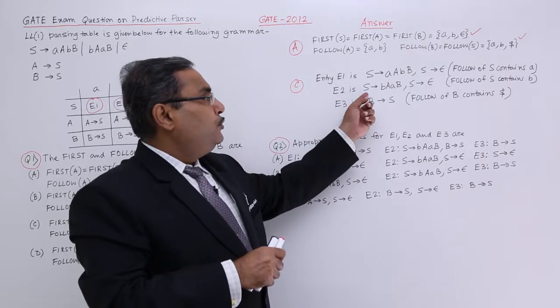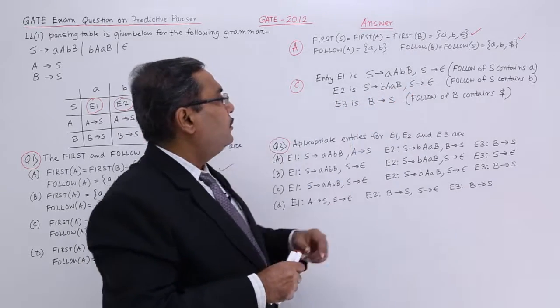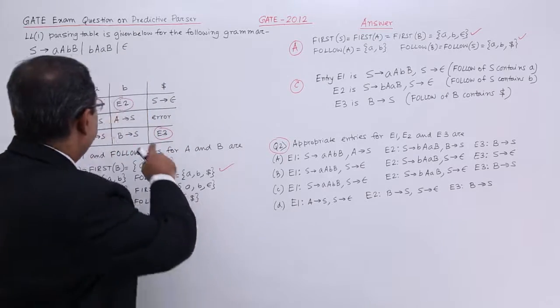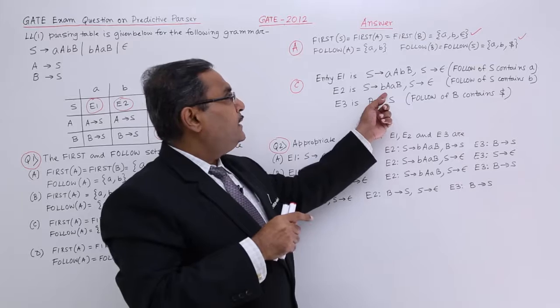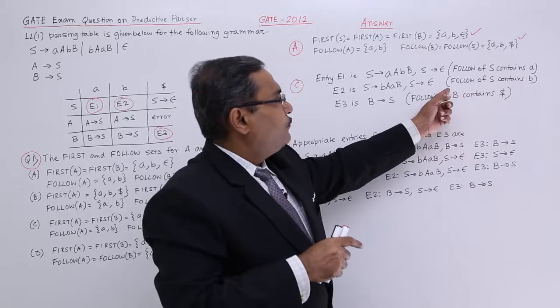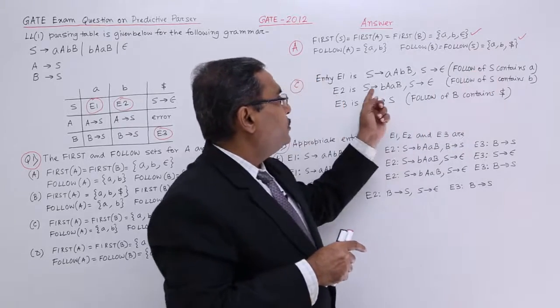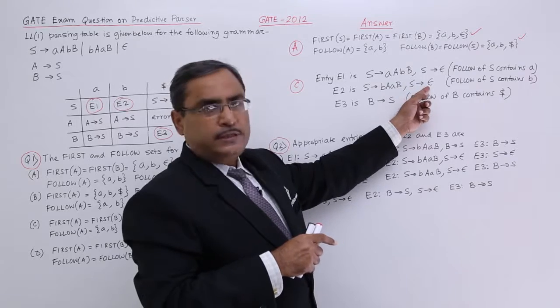Next E2, S produces BAAB and S produces epsilon. That is my E2. E2 means I should go for S B. Why is it placing there? It is getting placed there because B is also there in follow of S. Follow of S contains B. That is why this particular production rule will come and along with this S produces epsilon.